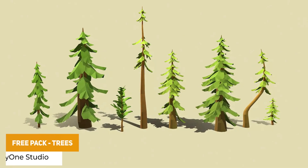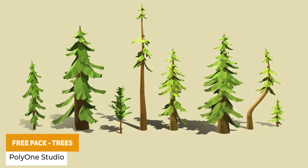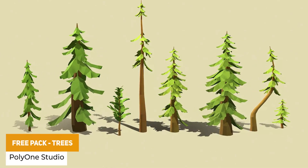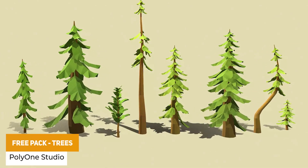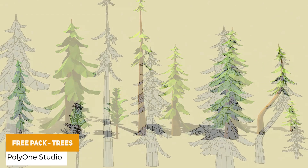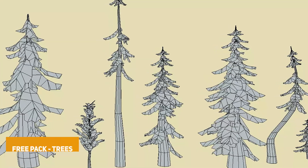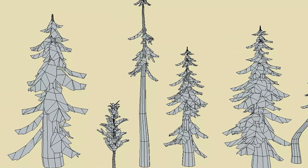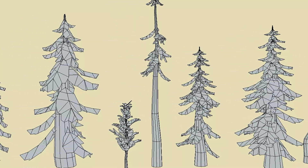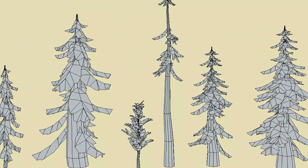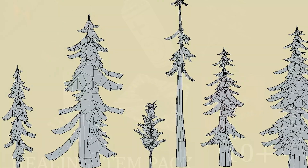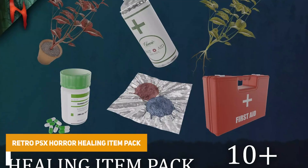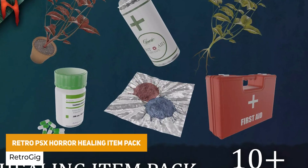Next is the Free Pack Trees, which I thought was quite a nice one. It includes 8 free low poly trees, optimized around 500 to 2K polygons per asset, with nice clean UV maps.